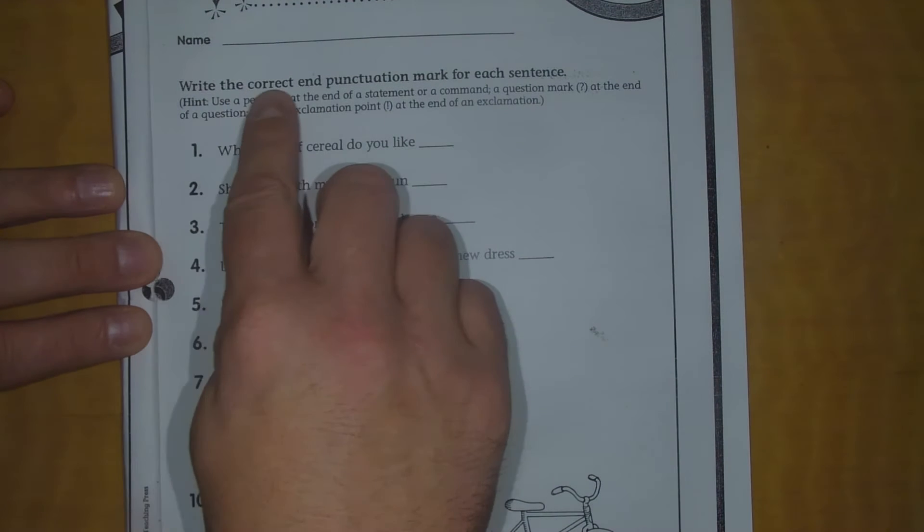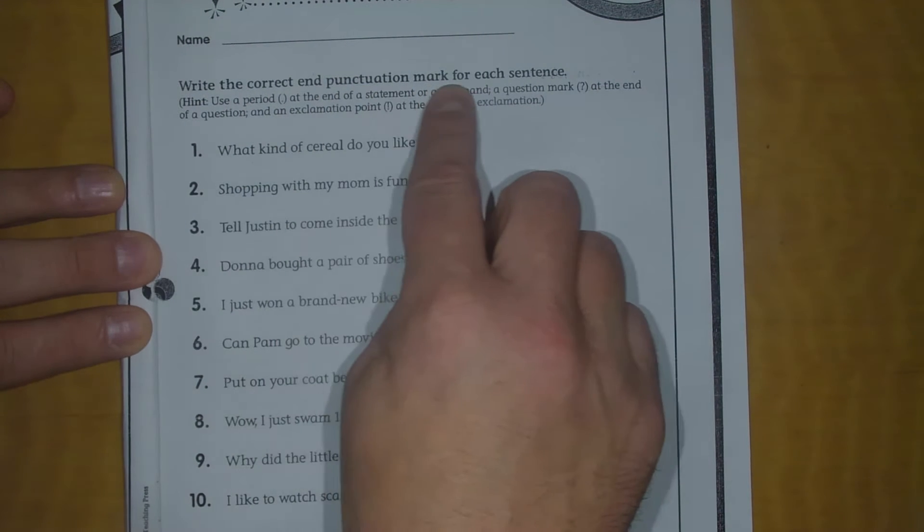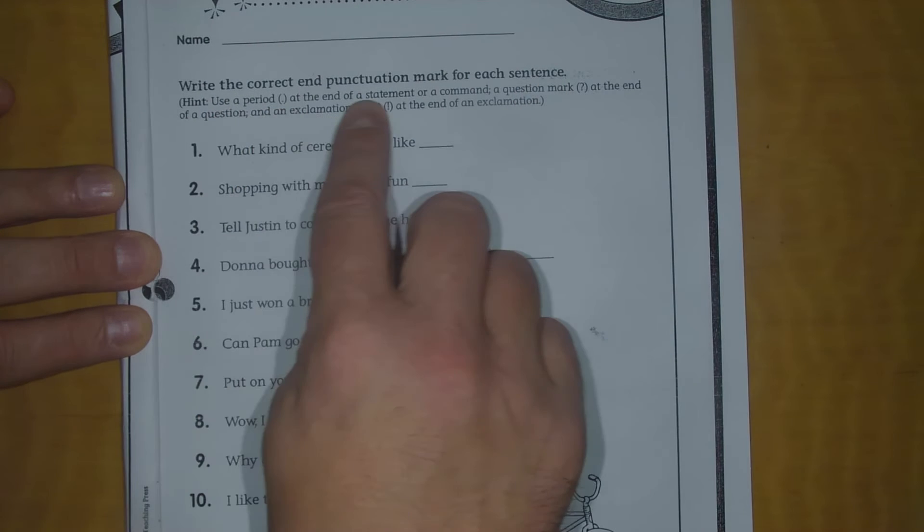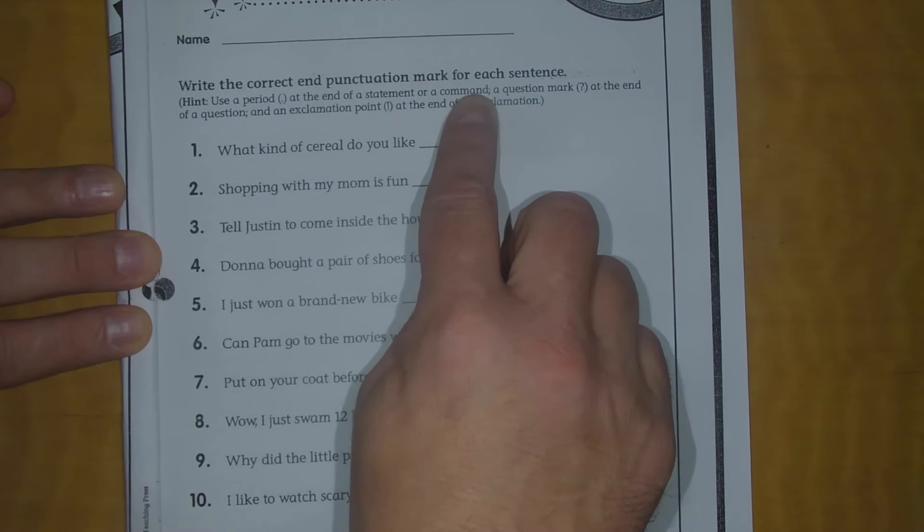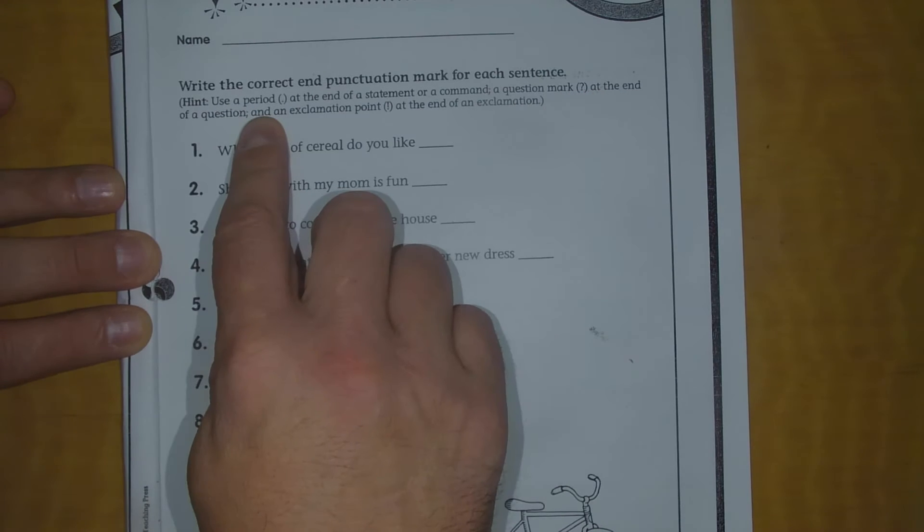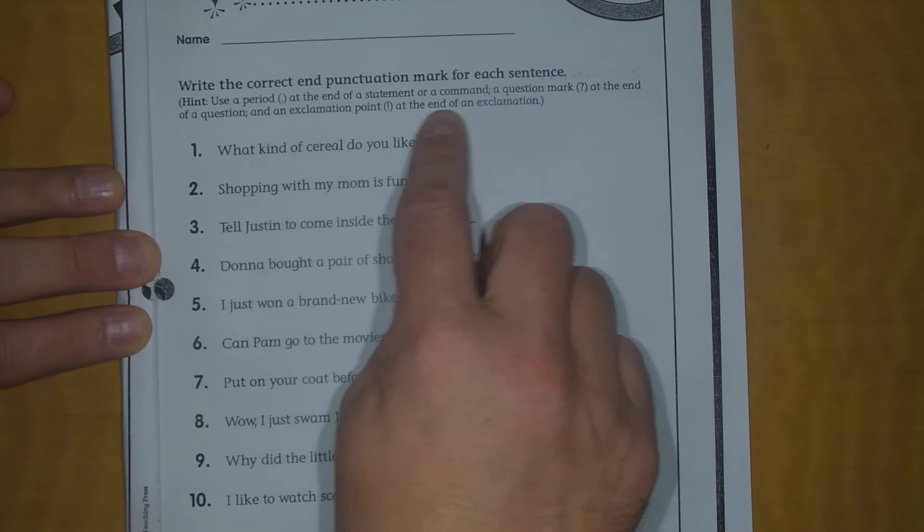It says, write the correct end punctuation mark for each sentence. Hint: use a period at the end of a statement or a command, a question mark at the end of a question, and an exclamation point at the end of an exclamation.